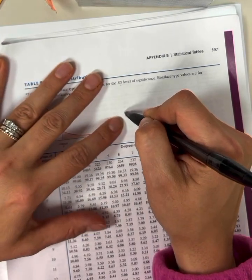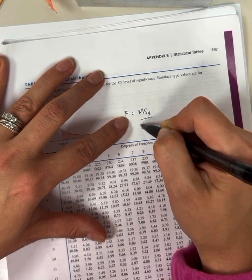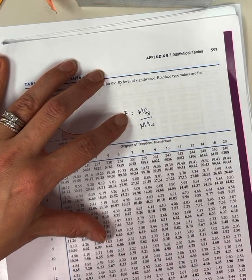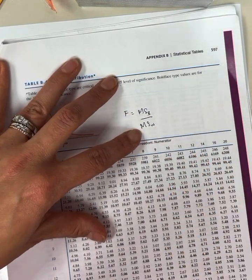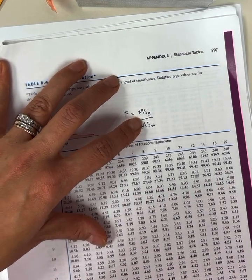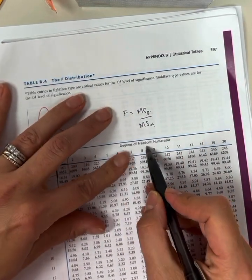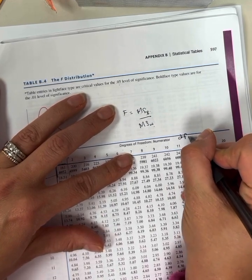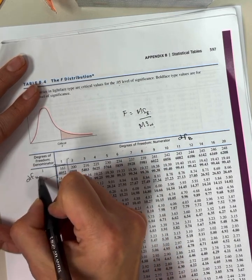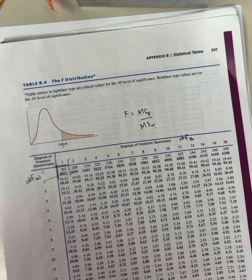Eventually, the F statistic formula is that you have your mean square between divided by mean square within. To calculate your mean square between, you use degrees of freedom between. To calculate your mean square within, you use degrees of freedom within. The top part's the numerator, the bottom part's the denominator. So when it says degrees of freedom numerator, that is degrees of freedom between. When it says over here degrees of freedom denominator, that is degrees of freedom within.